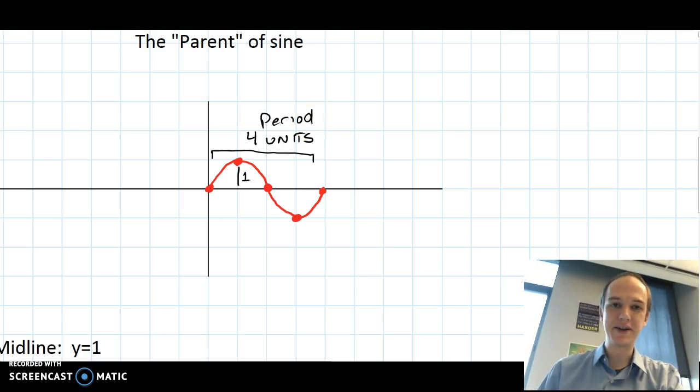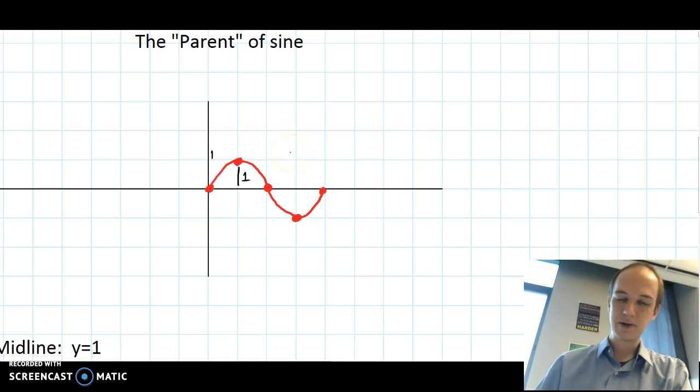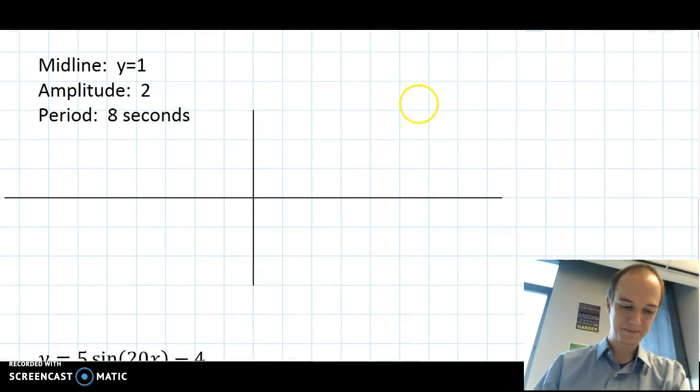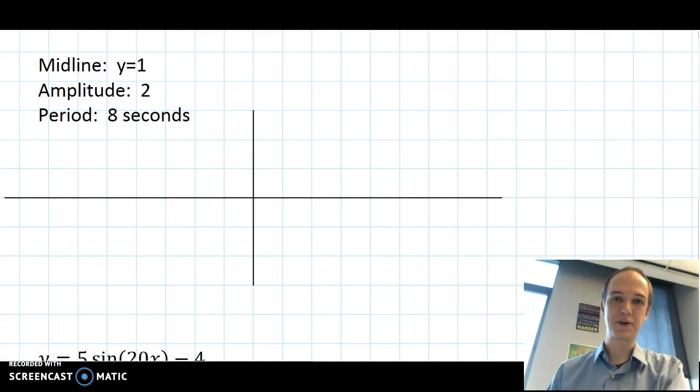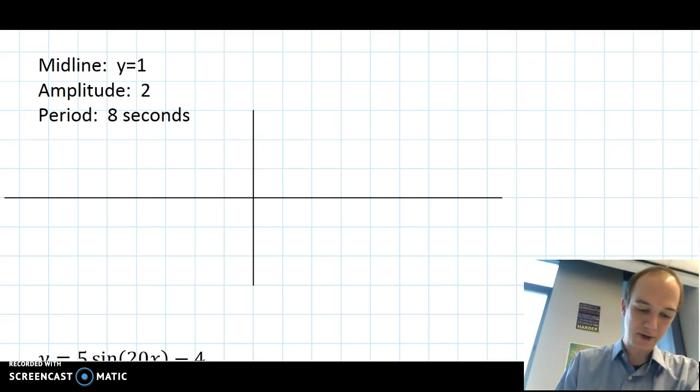Those are the basic ideas that you need to solve functions like this. Let's go ahead and graph something. The function that we first want to graph has a midline at y equals one, an amplitude of two units and a period of eight seconds. You're going to start by graphing the midline. So it looks like the numbers are small, so we can just keep the scale at one to one for this particular graph.